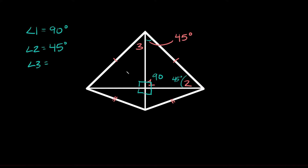And lastly, angle three — we can actually find that using side-side-side. If you look at the bigger triangles within the kite, we have a triangle on the right and the same triangle on the left. We're given that this side is congruent to this side, and this side is congruent to this side, and they also share the middle side. So we have two triangles with three congruent sides, meaning three congruent angles. Since the corresponding angle is 45 degrees, angle three is also 45 degrees.